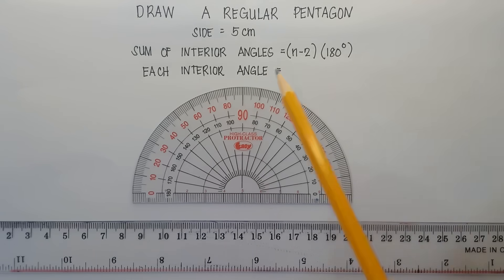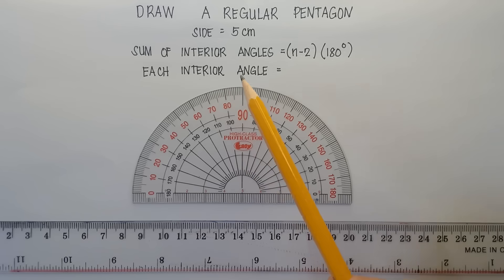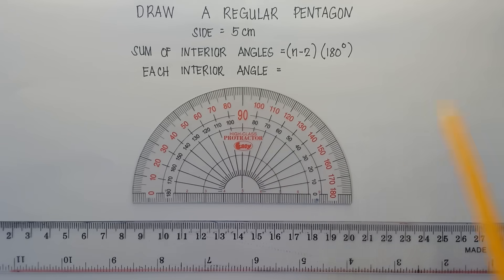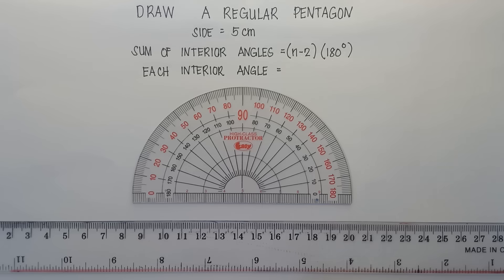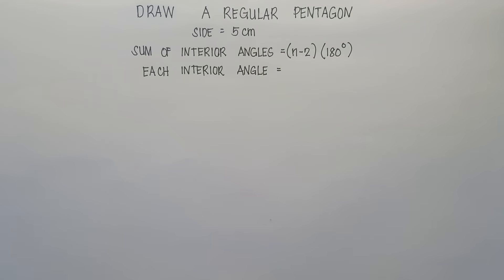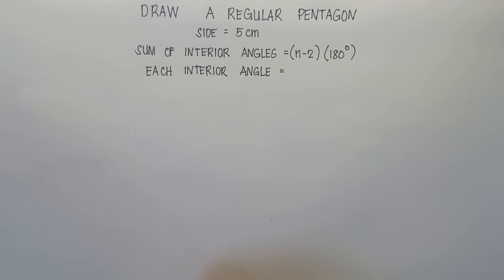If the teacher provides the measure of each interior angle for a regular pentagon, that would be a good thing because you can simply draw it. But if it's not given, you need to find the measure of each interior angle. So to find that, we can use this formula — the sum of the interior angles.